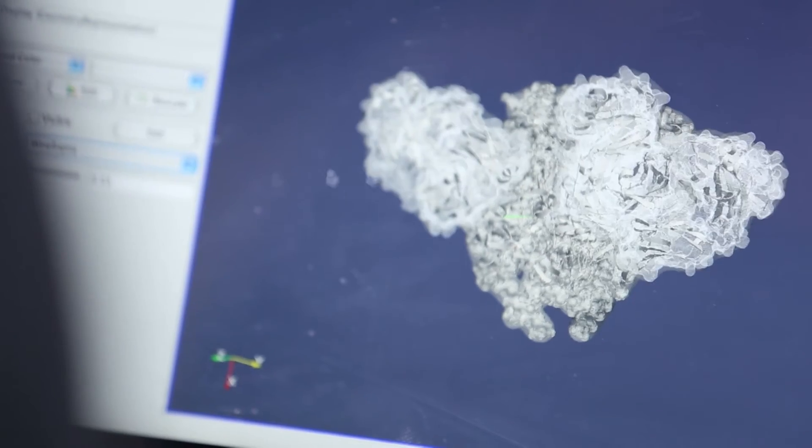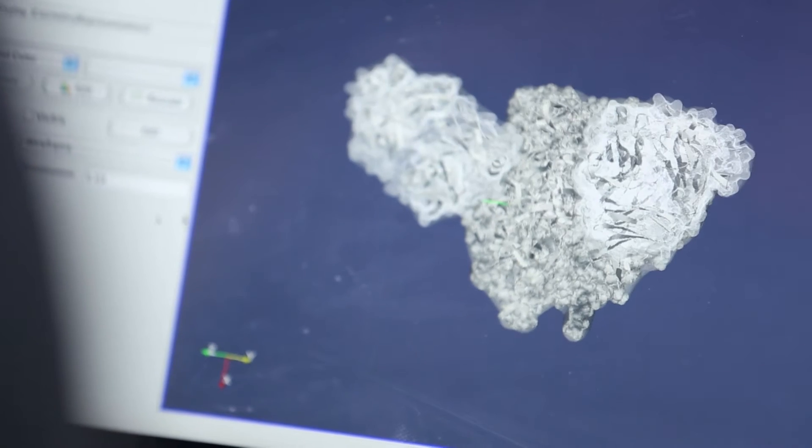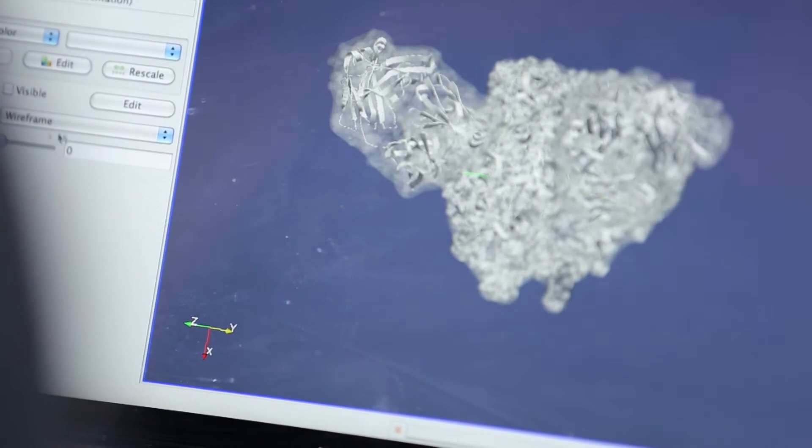There's a weakness where the trimer and the envelope meet and they think at that weakness they might be able to then develop a drug that can go in at that point to the center and then kill the virus.